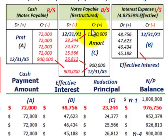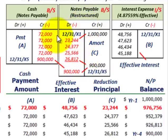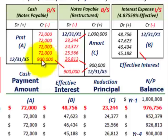When the note actually comes due at the end of the fourth year, we have the $900,000 balance in notes payable. We debit notes payable by $900,000 to remove it from the books, and credit (reduce) cash by $900,000 — the maturity value when it comes due.